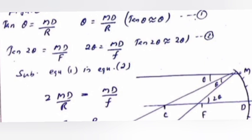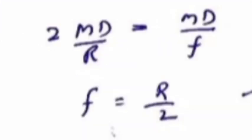Substituting equation 1 in equation 2 gives 2MD/R = MD/f, so the relation connecting focal length and radius of curvature of a spherical mirror is f = R/2.